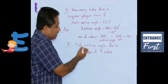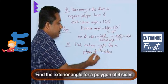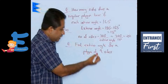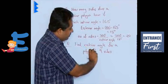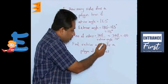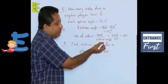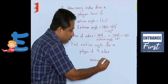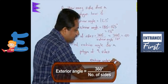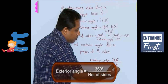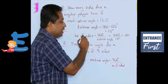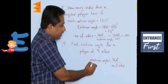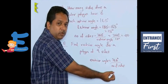Let us look at another question: find the exterior angle for a polygon of 9 sides. In the previous question we had to find the number of sides; in this question we have to find the exterior angle. The formula changes slightly: the exterior angle equals 360 divided by the number of sides. So, if we want number of sides it is 360 upon exterior angle, and if we want exterior angle it is 360 upon number of sides.